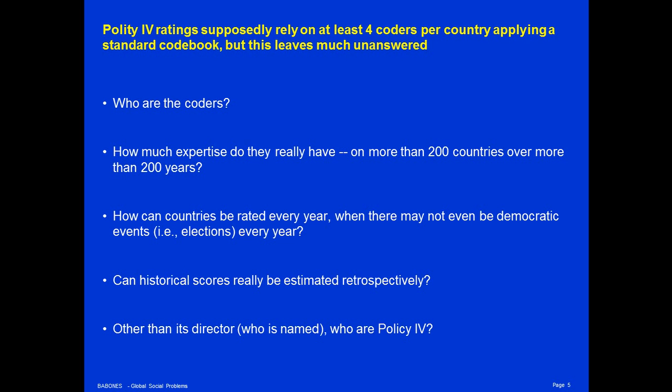Many people may be experts on democracy in the United States or France, but how many people are experts on democracy in Mongolia or Cambodia or Paraguay? There are some 200 countries in the world to be ranked in every one of 215 years going back to the year 1800. That's a huge ratings problem, and it's hard to imagine that you could find four people who have expertise on levels of democracy in Paraguay in 1848 who have real expertise on that. The Polity project seems to use a core group of something like 20 or so people to do its democracy ratings. The idea that they could collectively have sufficient expertise for every country in the world is just fantastical.